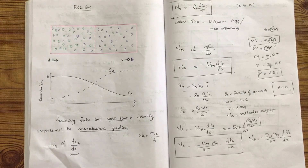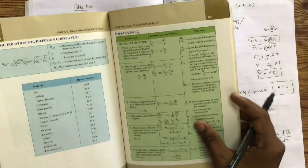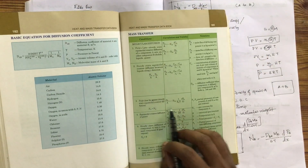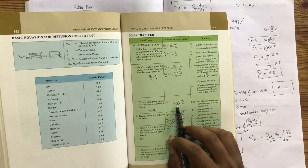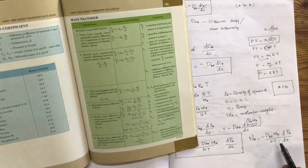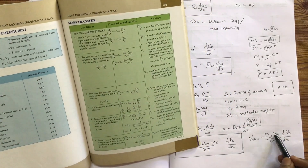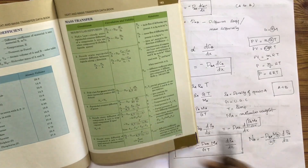So we can make this equation a little better. Now let's look at the data book. Fick's law for gases: DAB times 1 by RT. This is RT, this is G by M.